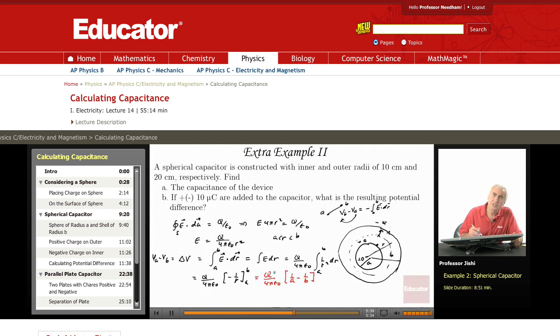Now Q, C is Q over delta V. Here's delta V, here's Q. Q over delta V is simply 4 pi epsilon 0 over 1 over A minus 1 over B. So this is the capacitance of the capacitor.